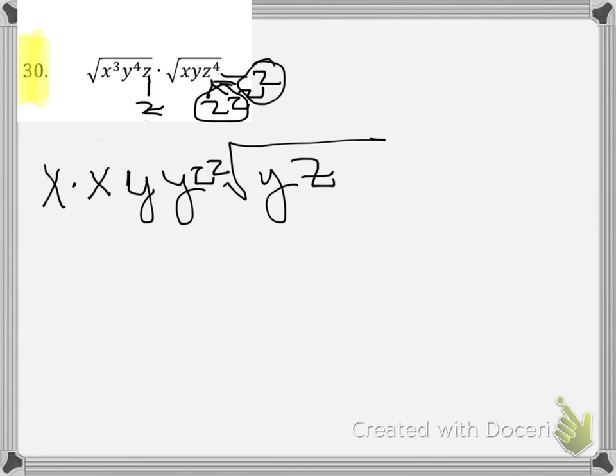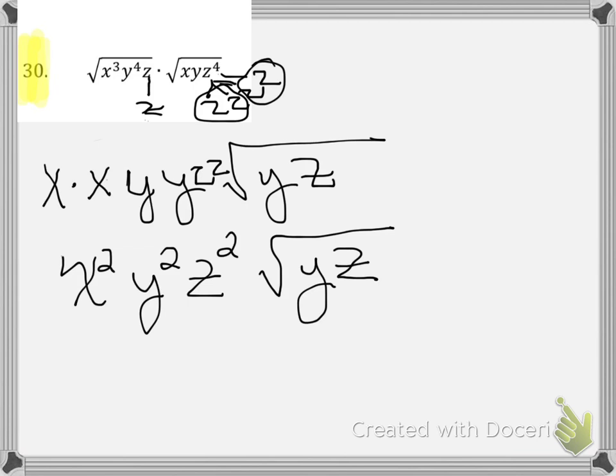When we combine these, we have x squared, y squared, z squared, square root of y times z. And as you see, this is identical to what I previously showed you.